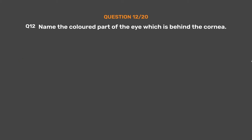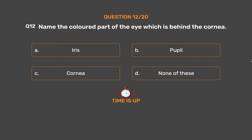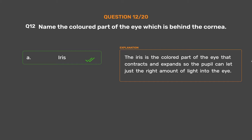Question number 12: Name the colored part of the eye which is behind the cornea. Option A: Iris. Option B: Pupil. Option C: Cornea. Option D: None of these. The correct answer is Option A, Iris. The iris is the colored part of the eye that contracts and expands the pupil so it can let just the right amount of light into the eye.